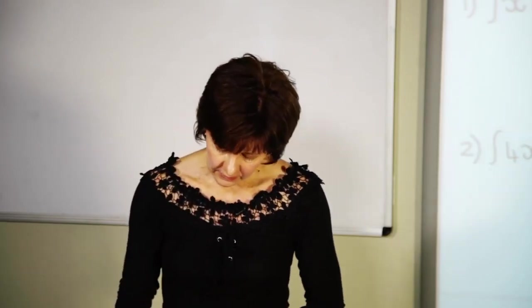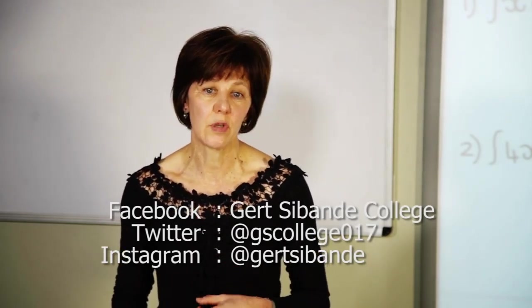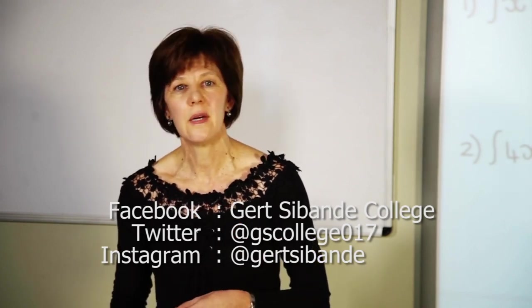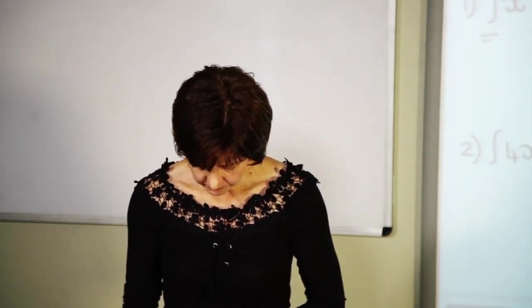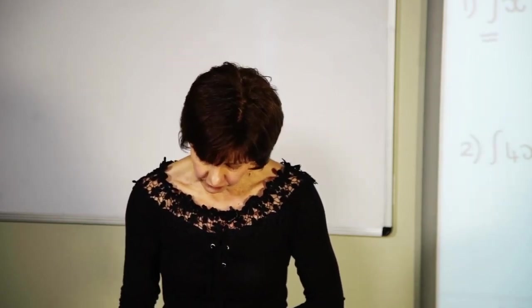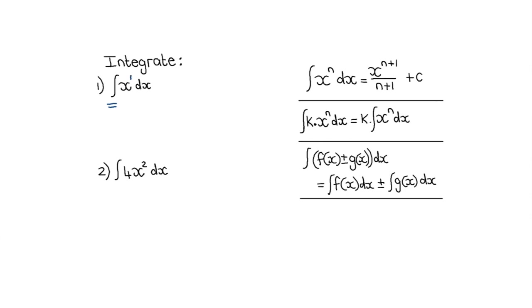The first question: integrate x with respect to x. We may be required to give answers with positive exponents and in surd form. Using Rule 1, I have x to the power 1. Write down x^1, add 1 to the exponent to get x^2, divide by the new exponent 2, plus a constant. Simplified: x²/2 + C.